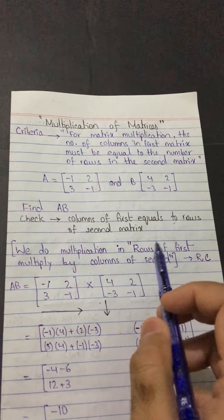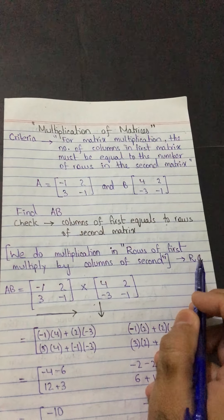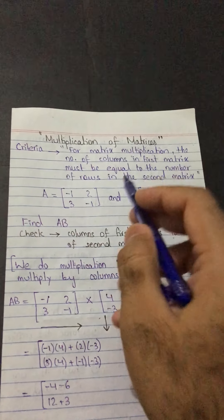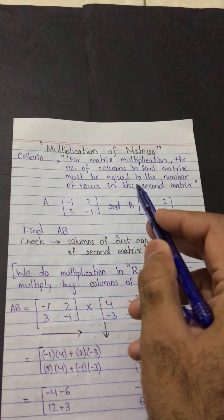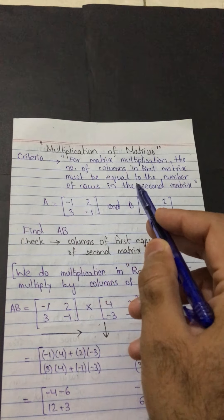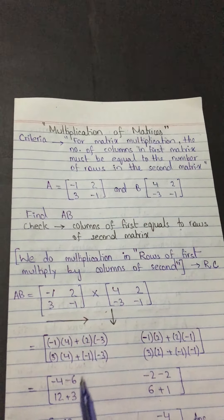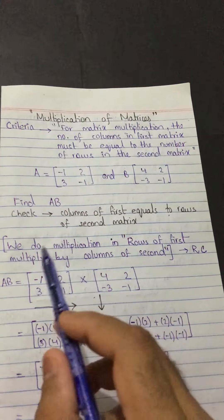Moving forward with the multiplication, we do it in the form of RC — rows of the first multiplied by the columns of the second. Remember RC: R stands for rows of the first, C stands for columns of the second. The criteria was CR — columns of the first equal to rows of the second — but when we actually multiply, we go with RC: rows of the first times columns of the second.